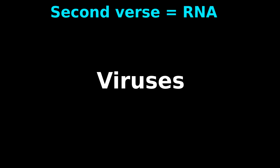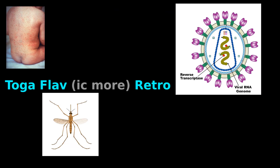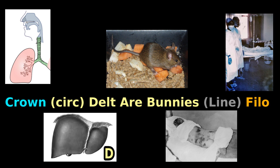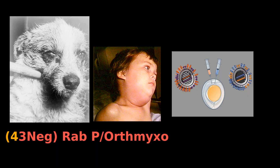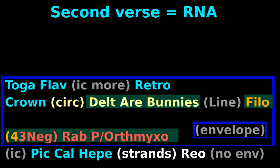Second verse RNA now: Toga Flavik, more retro, Crown, Cirque, Delta R, Bunnies, Line, Phi, Low — Four Three Neg — Rab, Porth, Mixo, Ick, Pick, Cal, Heap, Strands, Reo — No Envelope!